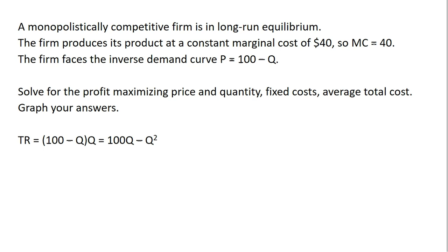So let's start with finding the profit-maximizing price and quantity. First, we'll get the firm's total revenue. Total revenue is price times quantity. So 100 minus Q represents the price, as we've been told. So 100 minus Q times Q equals 100Q minus Q squared. We'll take the derivative of that to get marginal revenue. So the derivative of 100Q minus Q squared is just 100 minus 2Q.